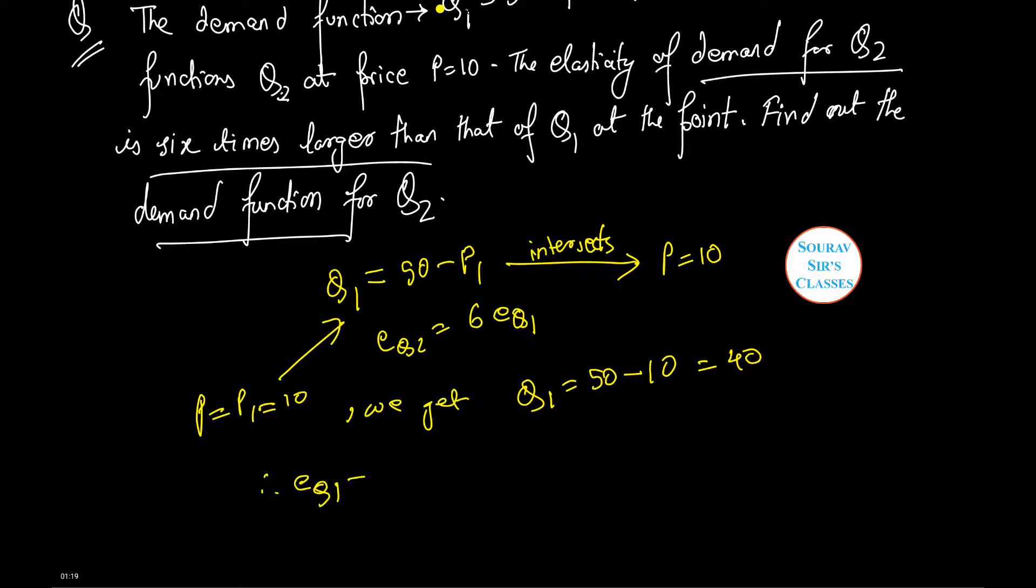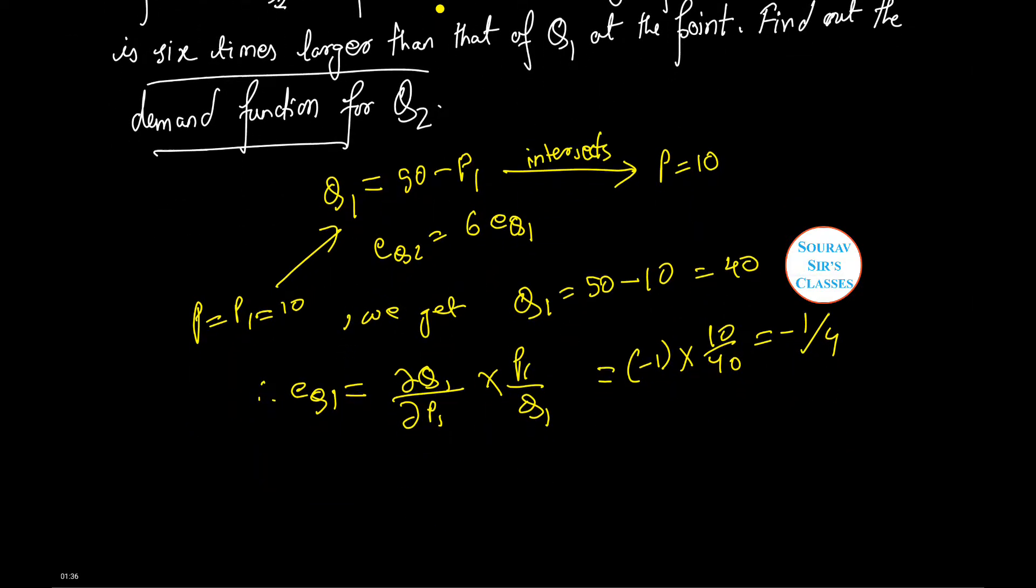Therefore E_Q1 equals dQ1 by dP1 times P1 by Q1. Now putting in the values we have minus 1 times 10 by 40 which is minus 1 by 4.